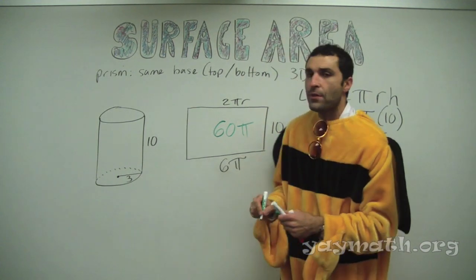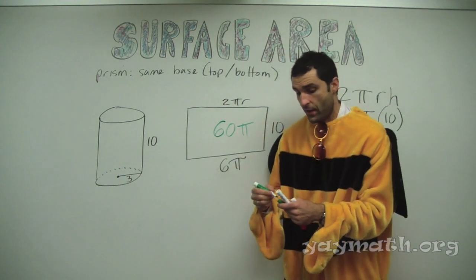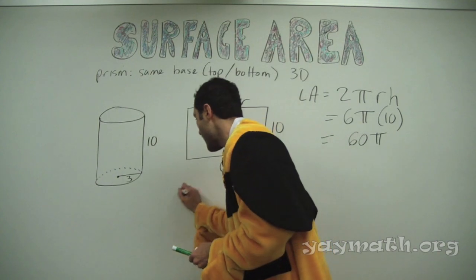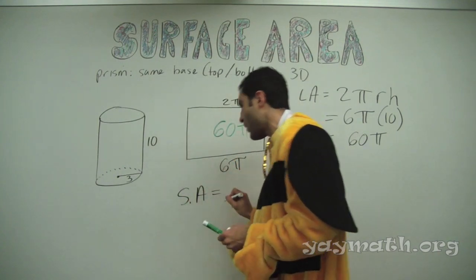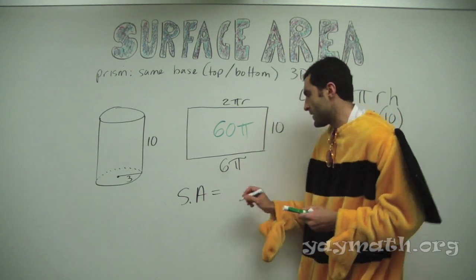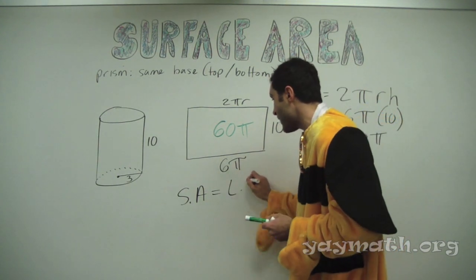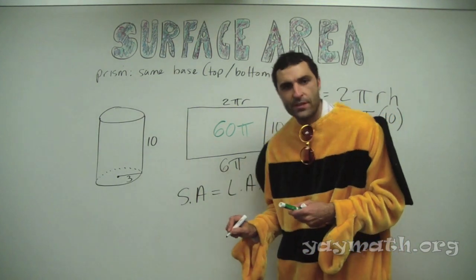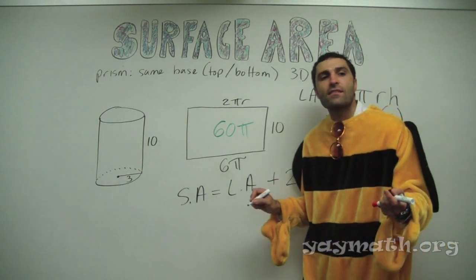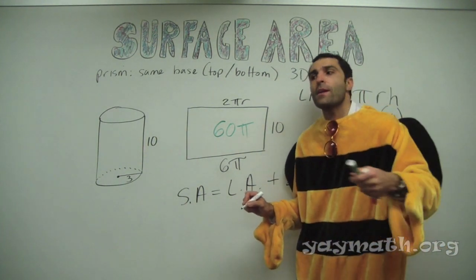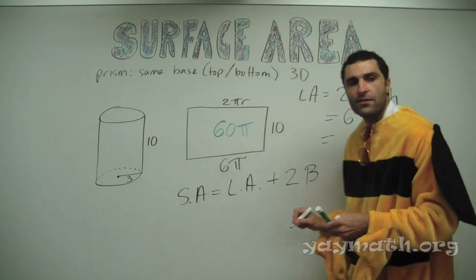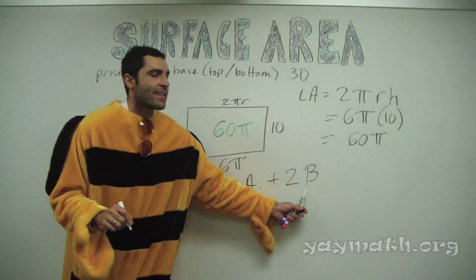Most of the work is done. Now we need surface area. Remind me the formula — SA equals what plus what? LA plus two bases. The lateral area — did we already calculate that? Yes. Plus two times the area of the bases.